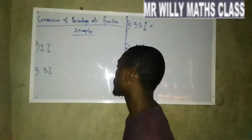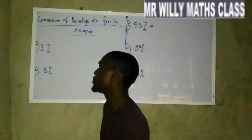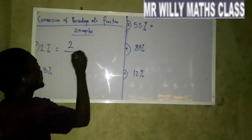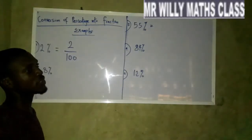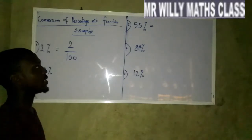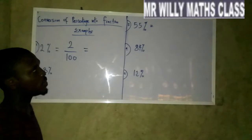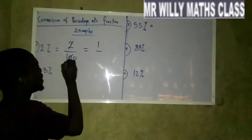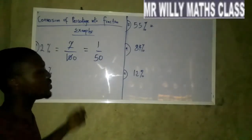If you look at the first question that we have, 2%, what 2% simply means is 2 divided by 100. We have converted 2% to a fraction. The next thing is that we break it down by using 2 to divide both the numerator and the denominator. 2 goes into 2 one time and 2 into 100 is 50. So your 2% as a fraction is 1 over 50.